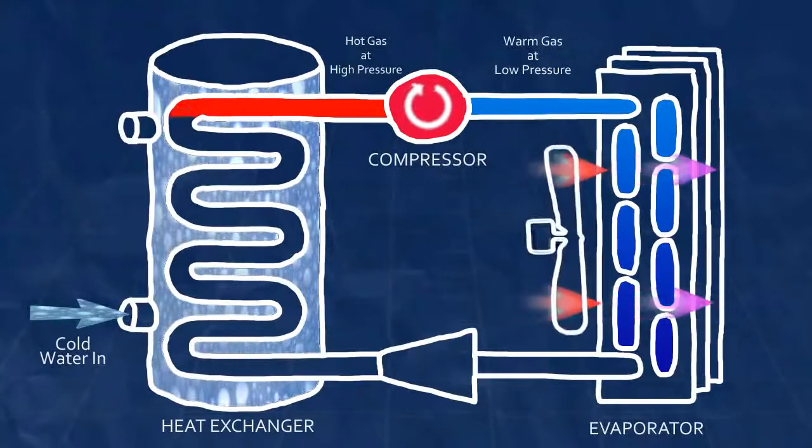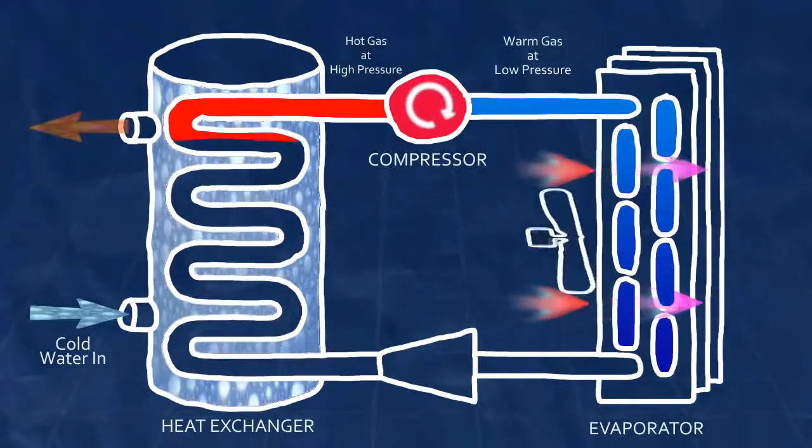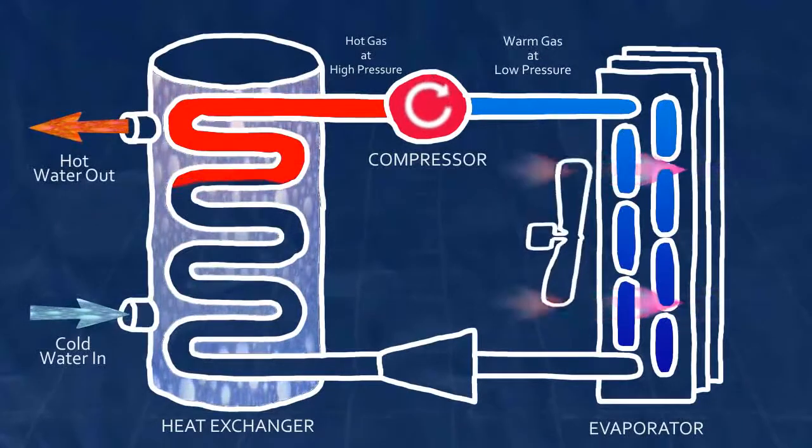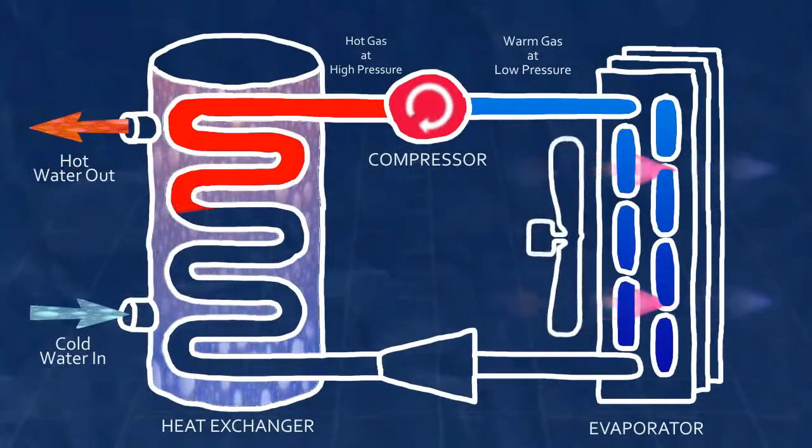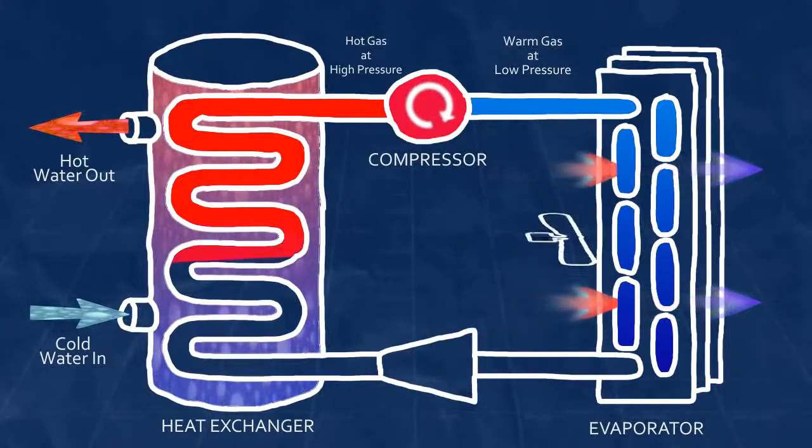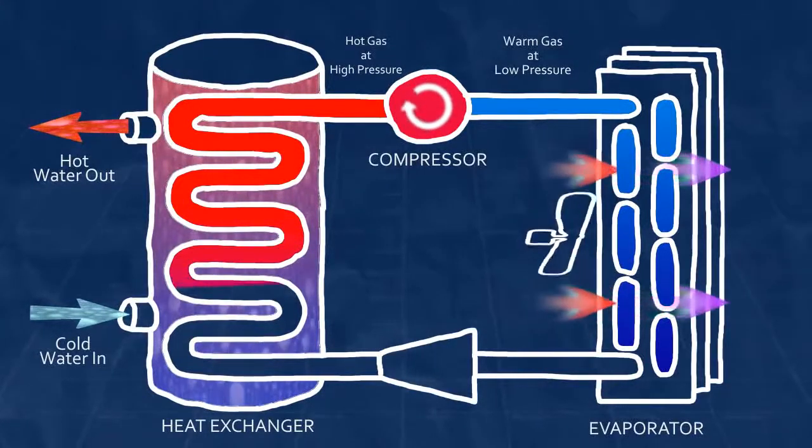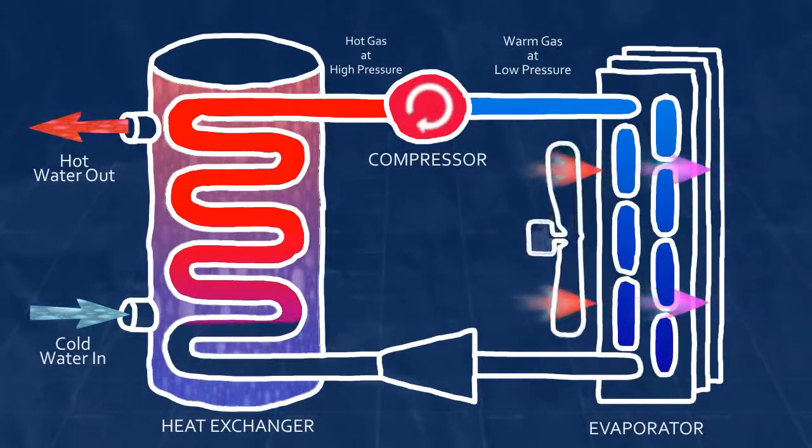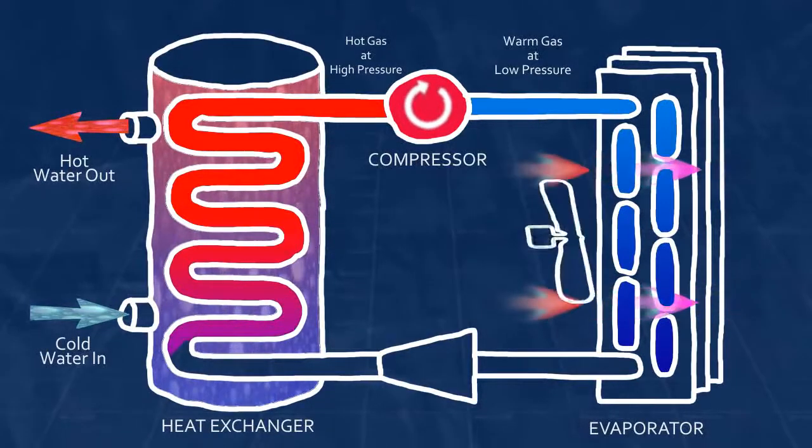The condenser is in contact with the water and the hot gas now gives up its heat to the colder water. As heat leaves the gas refrigerant, it cools off below its condensation point and changes from a gaseous state to a high pressure liquid state. The change from gas to liquid facilitates the large transfer of heat energy to the water.